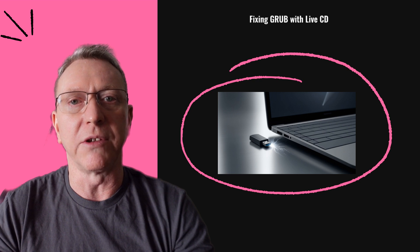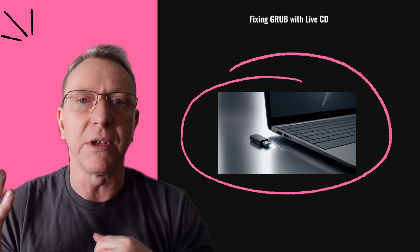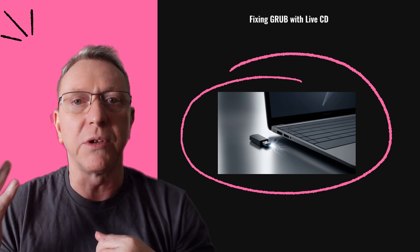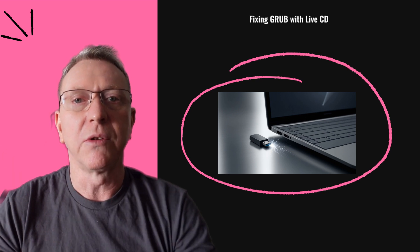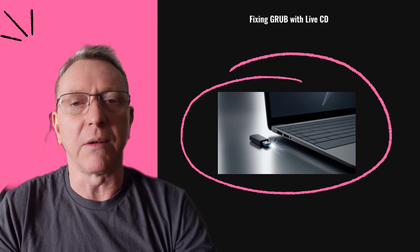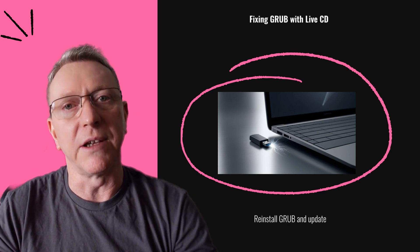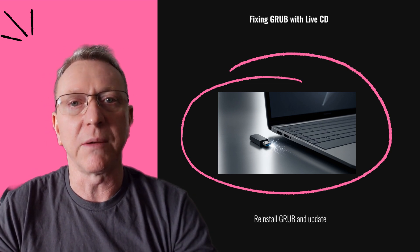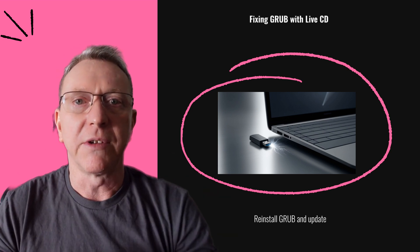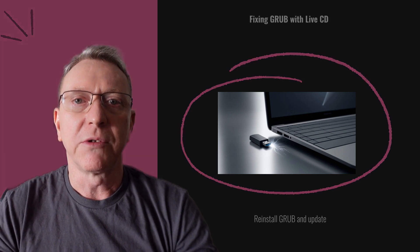To permanently fix GRUB, boot from a Linux Live CD/USB. Identify and mount your root and boot partitions, then use chroot to access your system environment. Reinstall GRUB using grub-install and update the configuration with update-grub. This ensures GRUB is correctly configured for future boots, preventing recurring boot issues.